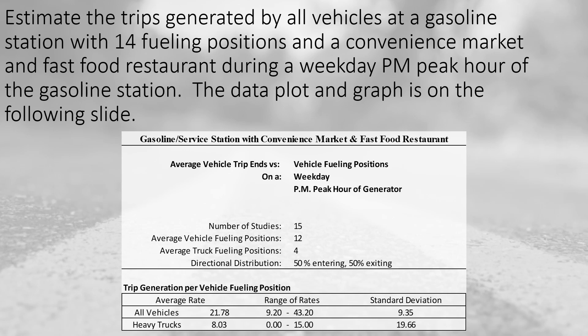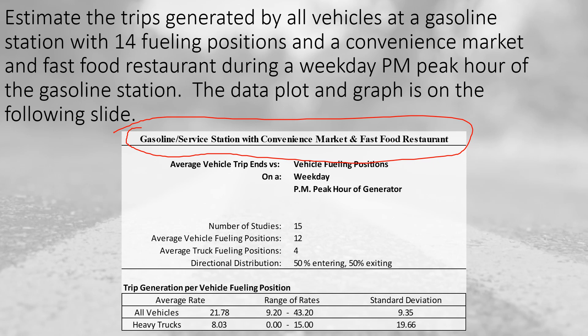In this example, we need to estimate the trips generated by all vehicles at a gasoline station with 14 fueling positions that also has a convenience market and a fast food restaurant. We want to look at a weekday PM peak hour of the gasoline station, and we have both the data plot and graph that would be similar to the ITE trip generation manual. The land use type matches the problem statement: a gasoline or service station with convenience market and fast food restaurant.